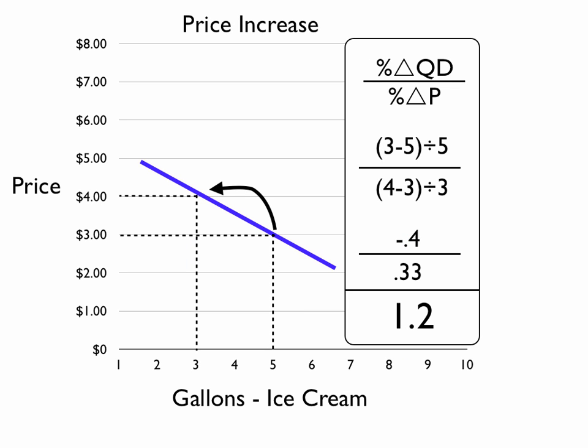...that when we considered a price increase, we calculated the elasticity. In the case of ice cream, it was 1.2. And when we calculated a price decrease going from $4 down to $3, we calculated the elasticity and it was actually a different number. This is because of the calculations we were using, the percentage change calculations. What we'd like to do is come up with a formula that would give us the average elasticity through that range.